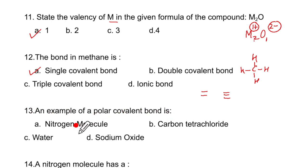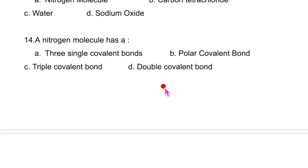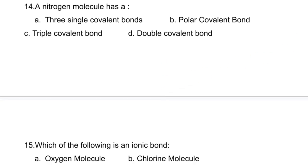An example of polar covalent bond is water. This electron pair is pulled towards oxygen developing slightly negative charge here and slightly positive charge here. So water is the correct option. A nitrogen molecule has triple covalent bond. So that is the answer.